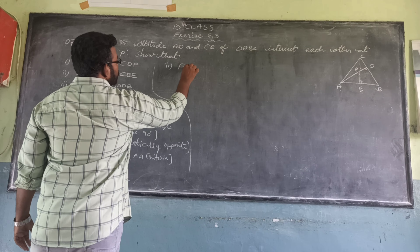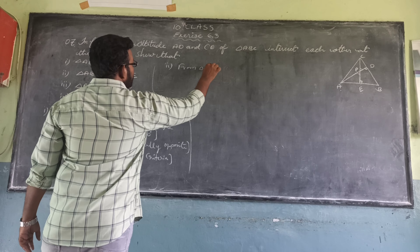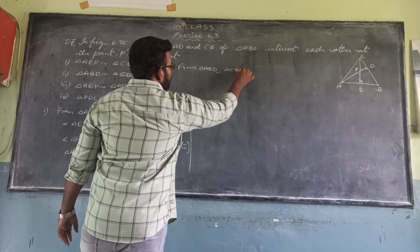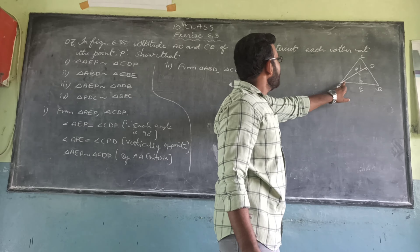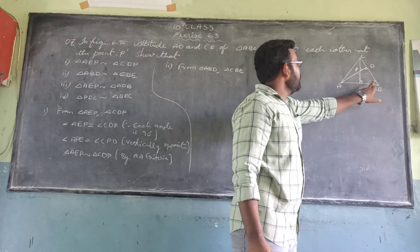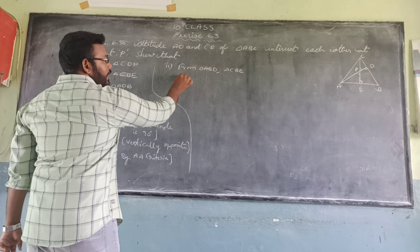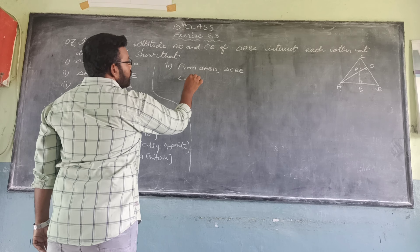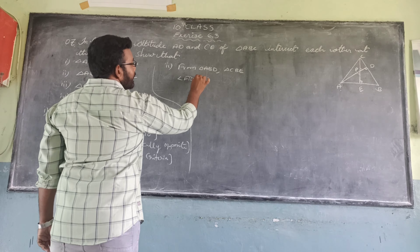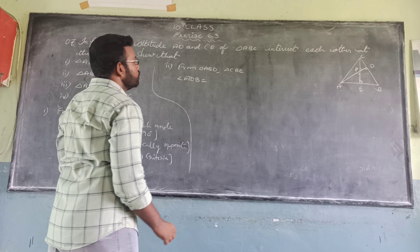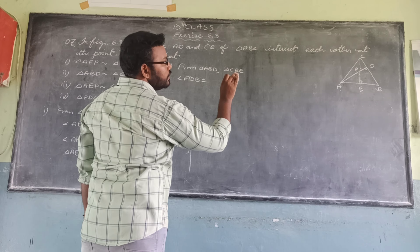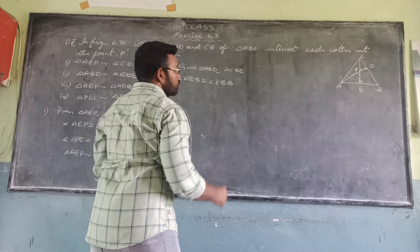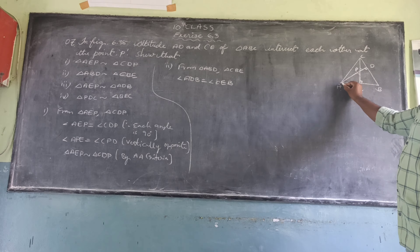For the second part, from triangle ABD and triangle CBE. Angle ADB is equal to angle CEB because each is 90 degrees. Also, angle ABD is equal to angle CBE — this is the same angle B in both triangles.